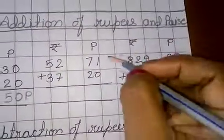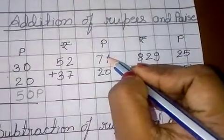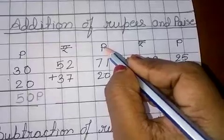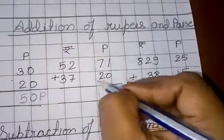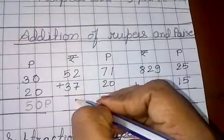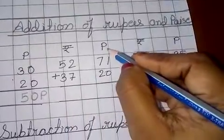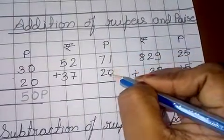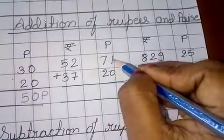Let us do one more example children. So number 2, here again the paise are—this is the paise column and this one is the rupees column. So first we will add paise. So in paise first add 0 plus 1.